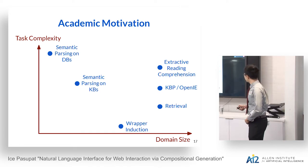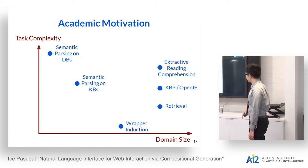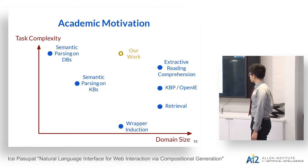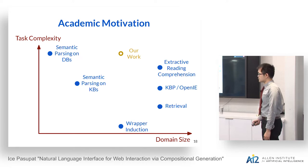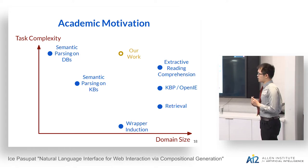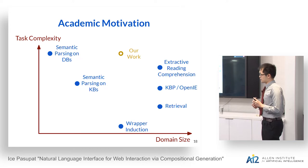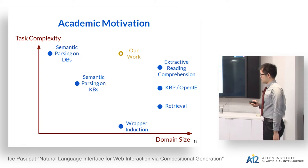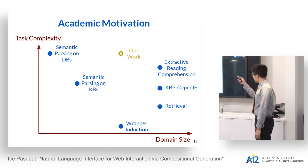The most recent addition to this graph is extractive reading comprehension — things like SQuAD, where you answer questions from a Wikipedia article. Our work is situated right around that region. In contrast to extractive QA where you extract an answer from text, we want to do more complex computation on semi-structured data like tables or product listings from the web.